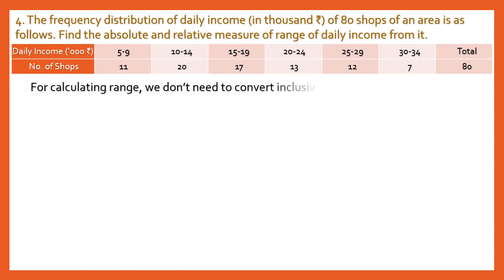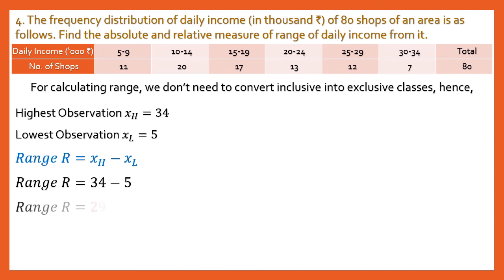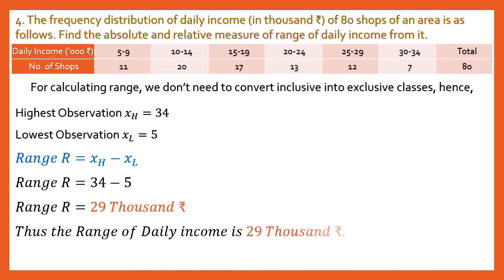Normally we convert inclusive classes to exclusive classes by adding or subtracting 0.5. However, for Range, this is one of the exceptions where we do not need to convert inclusive classes to exclusive classes. We just need the leftmost value — 5, which is the lowest observation — and the rightmost value — 34, which is the highest observation. Range = 34 − 5 = 29,000 rupees.